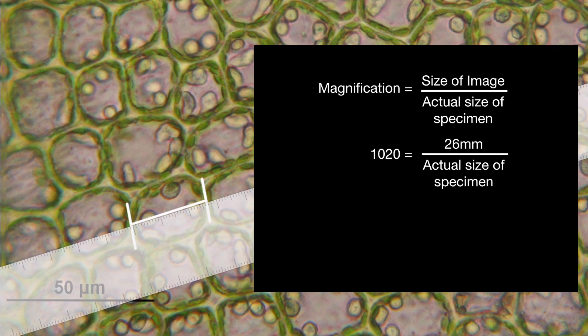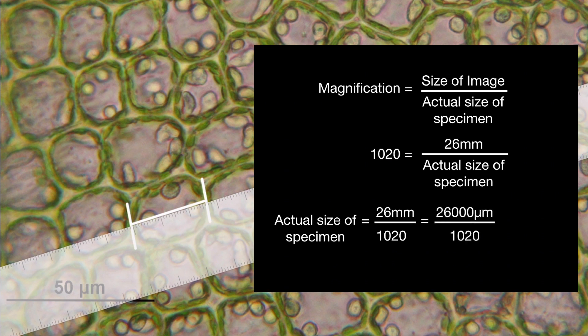We put this into our formula along with the magnification of 1020. To calculate the actual size of the specimen, we rearrange the equation: actual size equals image size divided by magnification. Converting 26 millimeters to micrometers gives 26,000 micrometers. Dividing 26,000 by 1020 gives a final answer for the actual size of the specimen of 25.5 micrometers.